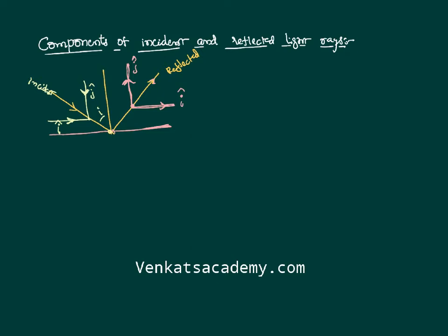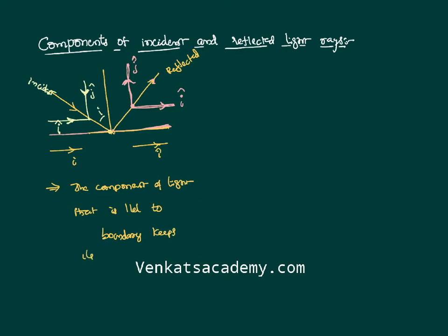What you can clearly notice in these diagrams is: look at i-cap for the incident light — it is like this — and for the reflected light, i-cap is also like this. So the component of light which is parallel to the boundary — this is what I mean by boundary, separating the two media or a mirror — that component parallel to the boundary keeps its direction the same; its direction is not changing.